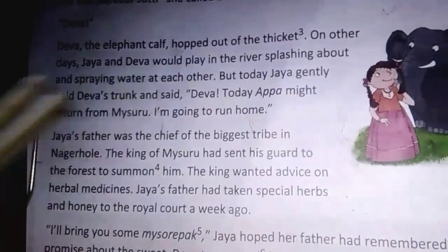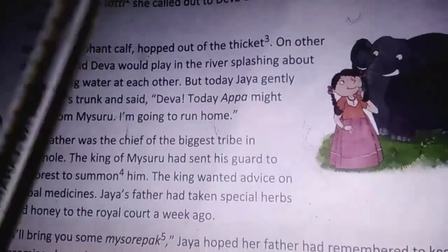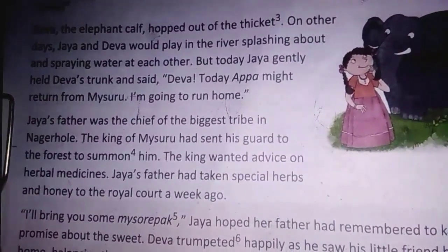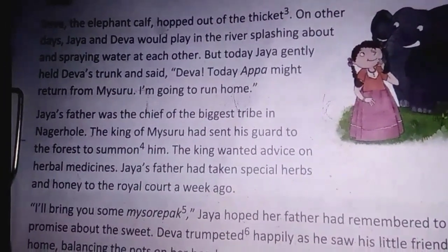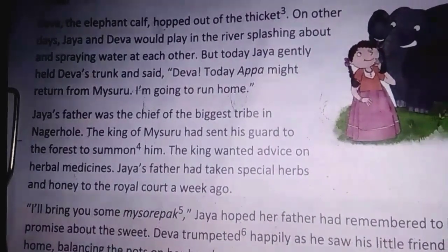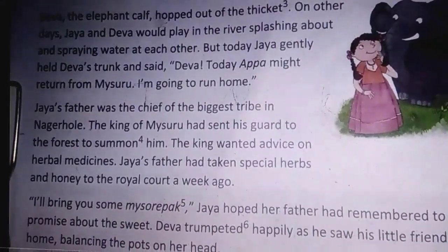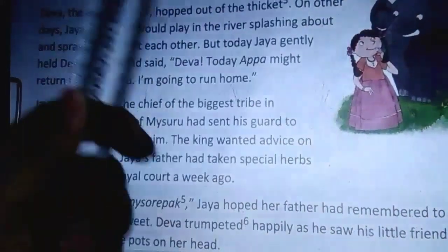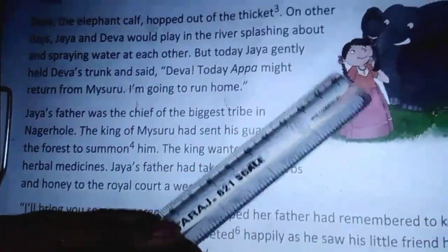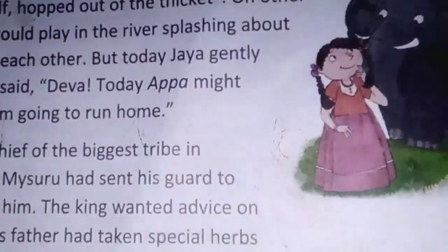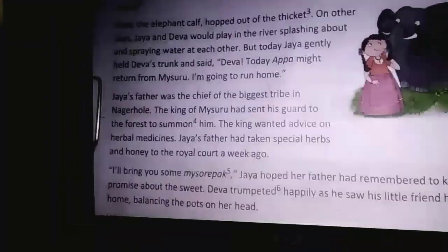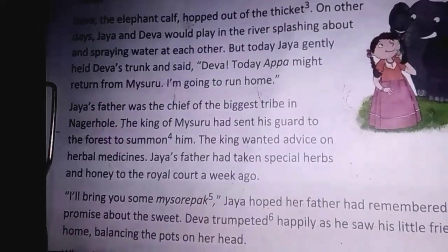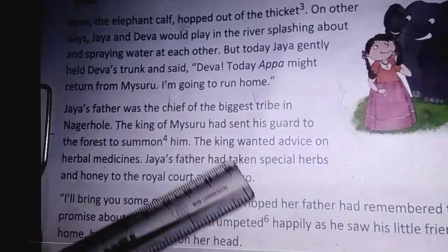'I am going to run home.' Deva the elephant calf hopped out of the thicket — thicket means a dense group of trees or bushes. Deva is coming forward towards Jaya to play, but she is not ready. She holds the trunk of the elephant and says, 'Today, Appa might return from Mysuru. I am going to run home.' She wants to meet her Appa, that is her father, who is coming from Mysuru.